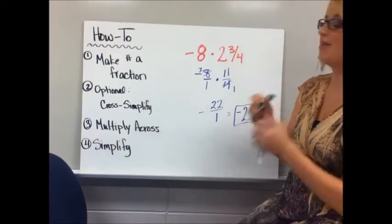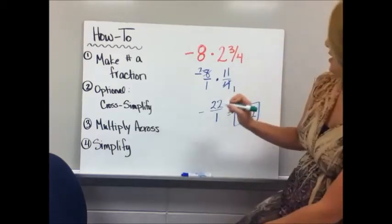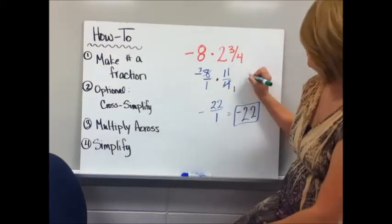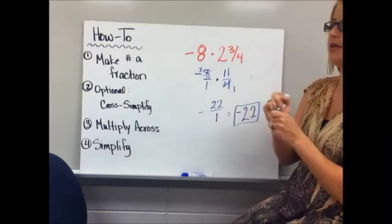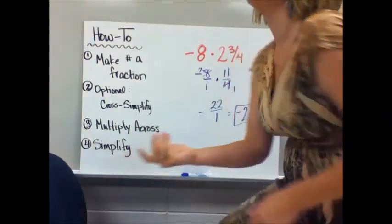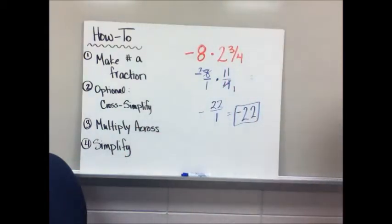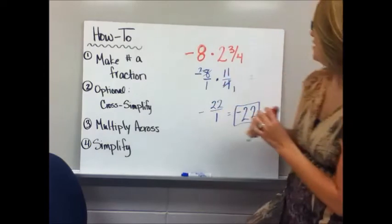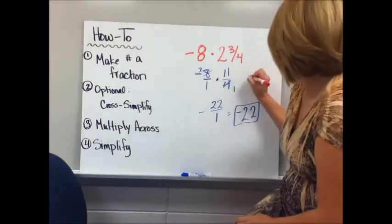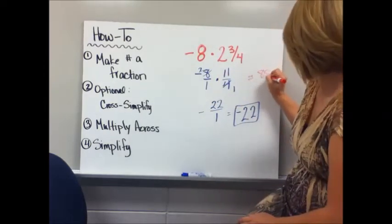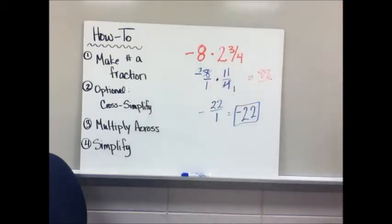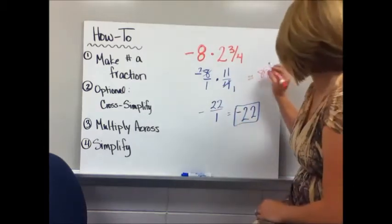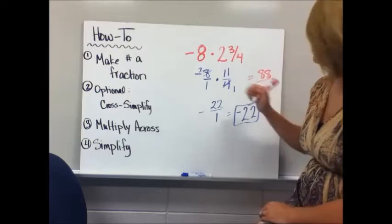And I will show you that. If I had not have cross-simplified, I would have got... Let's try this marker. 8 times 11, well that one's awful too. 88.